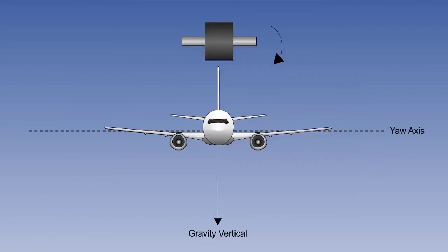In order to prevent topple, the gyro needs to be tied to the aircraft yaw axis or to gravity in order to keep it erect.